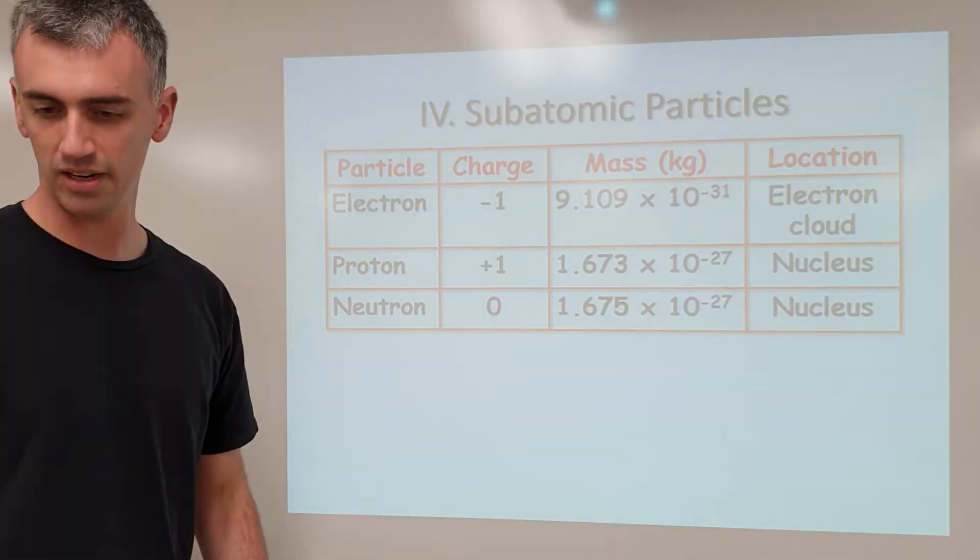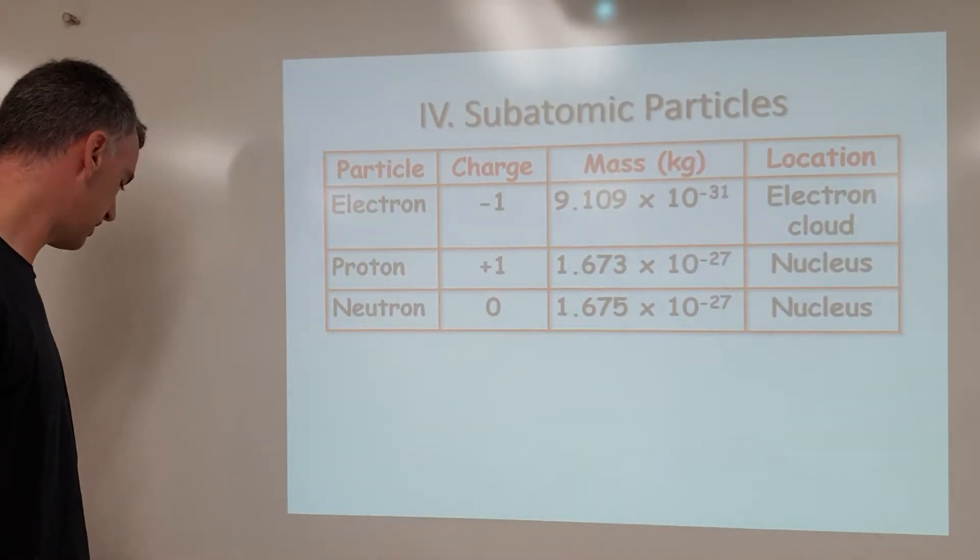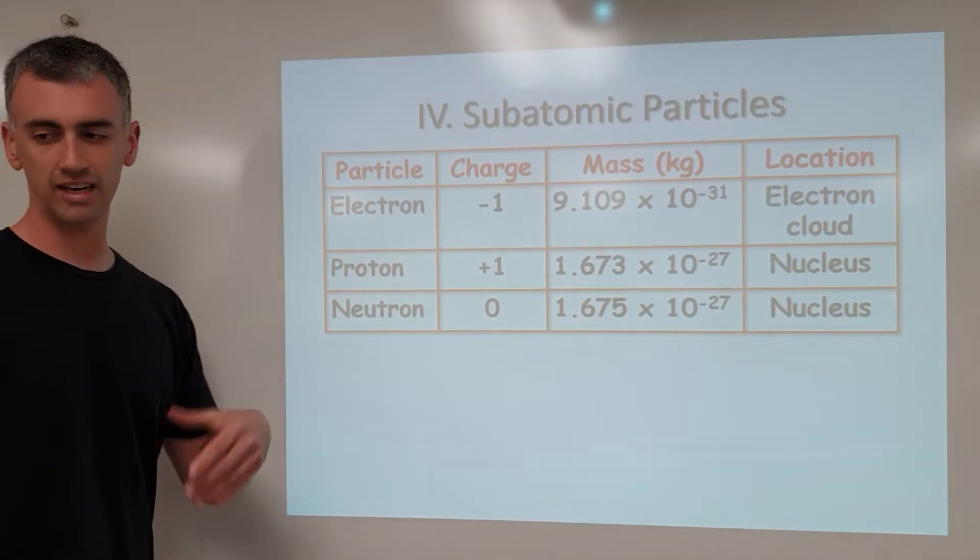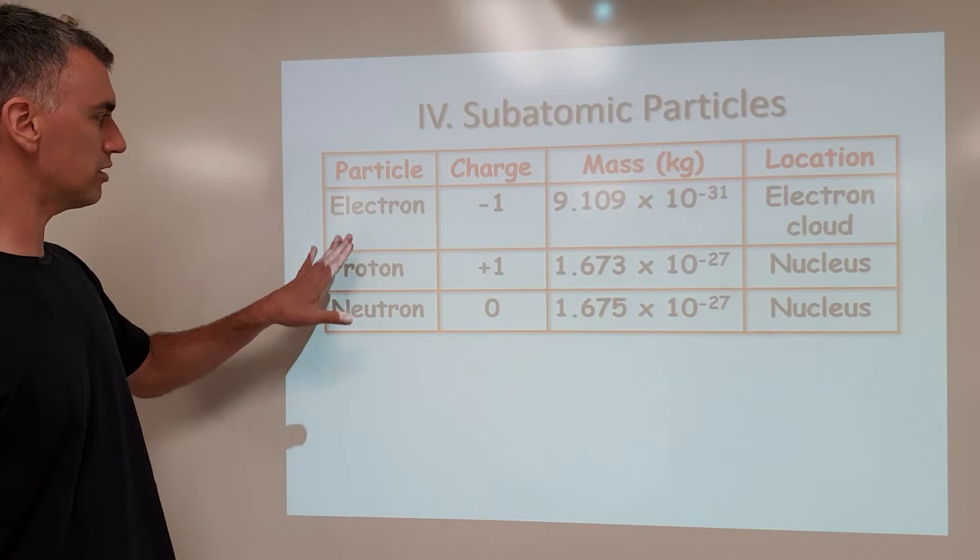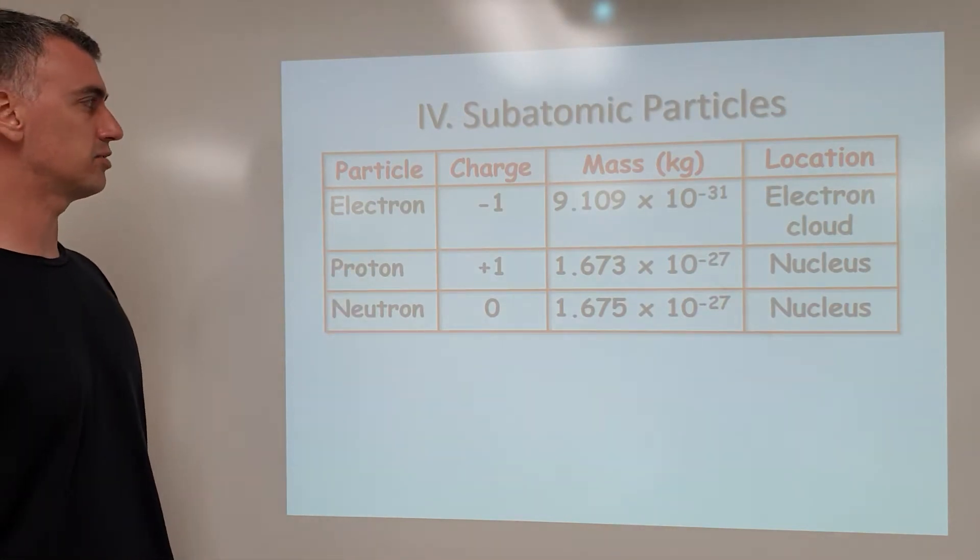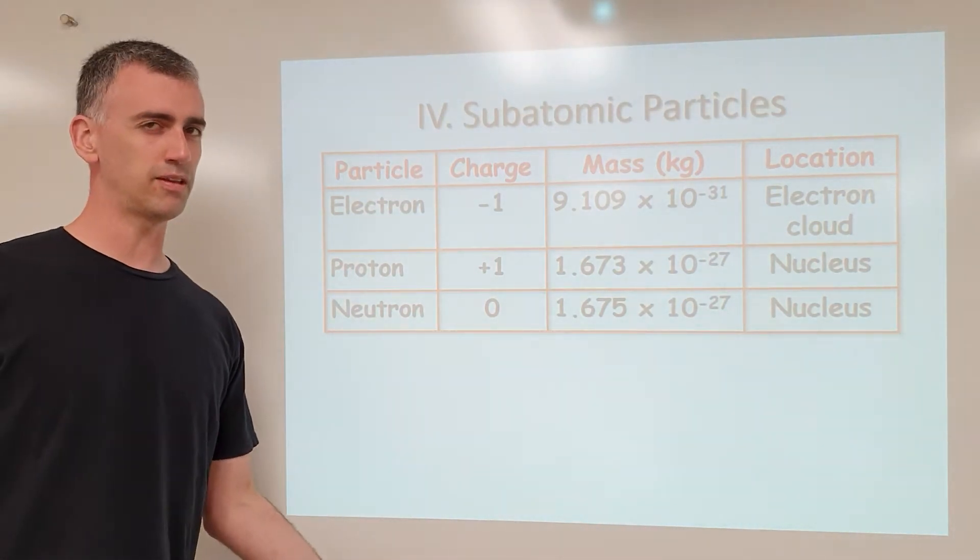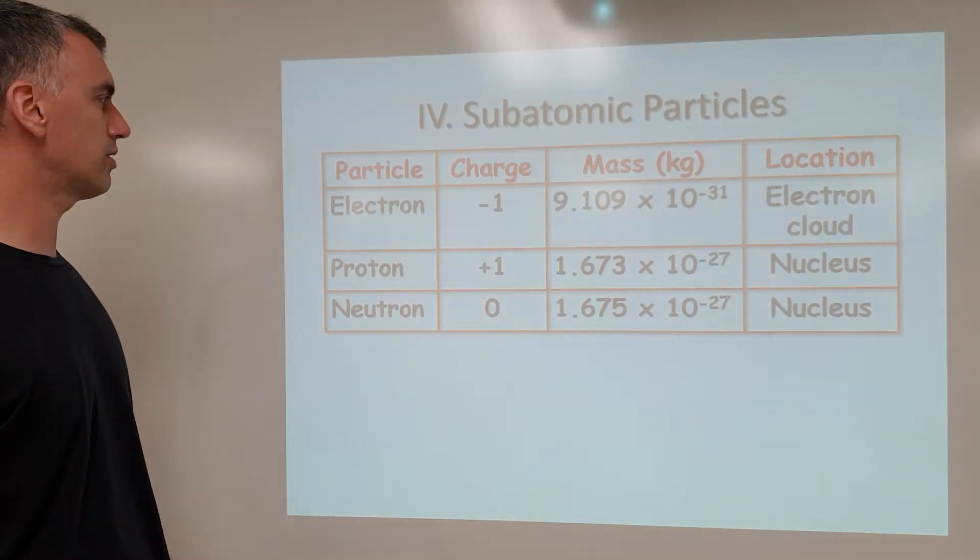All right, let's talk about what an atom is built out of. So if we're looking at the structure of an atom, we need to understand that atoms are made of smaller, simpler things. The electron, the proton, and the neutron are the things that we need to understand exist in the atom, and hopefully this is a review from eighth grade, but I want to make sure that we're all clear on things.